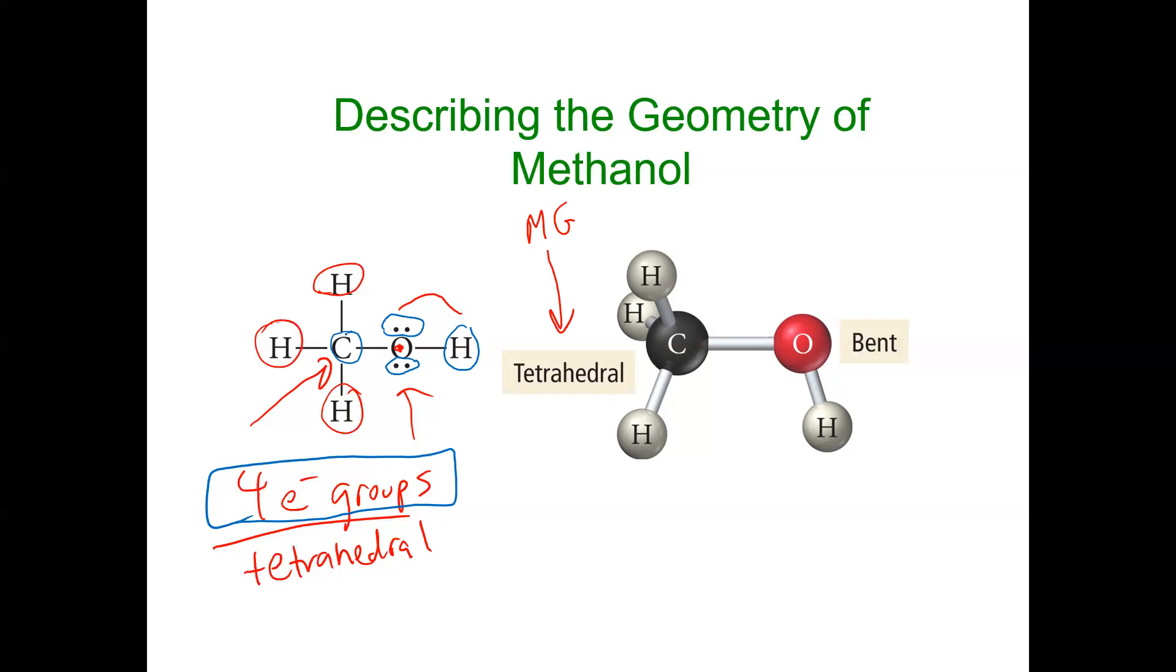So oxygen's four electron groups means it also has an electron geometry of tetrahedral. What is different is its molecular geometry.